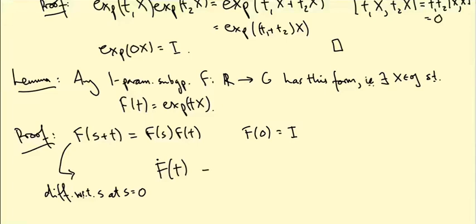And if I differentiate the right-hand side, I get F dot at 0 times F(T), because T is constant when I'm differentiating with respect to S. Now this is a differential equation in T, an ordinary differential equation satisfied by F.